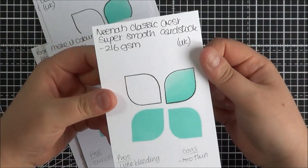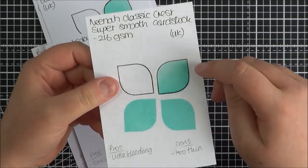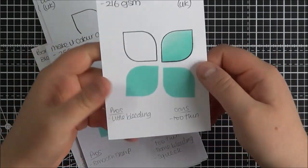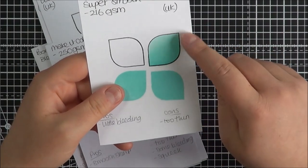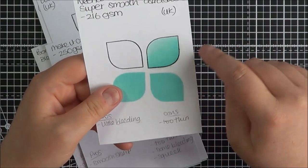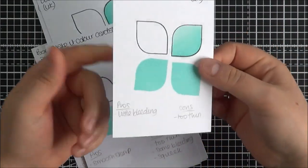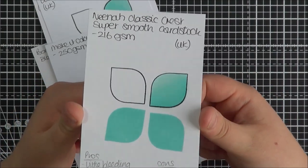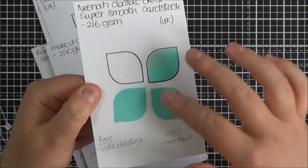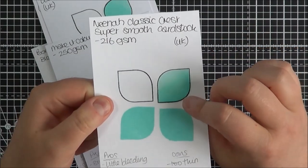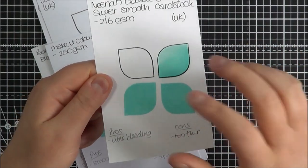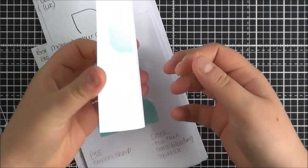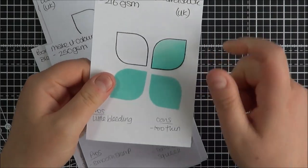I then got the Neenah Classic Crest super smooth cardstock which you can get in the UK. This is 216 GSM. For me it really feels quite thin. It's nice and smooth. There was a tiny bit of bleeding however not much at all. Stamp wise not too bad. Shame it's so thin but I guess I know a lot of people would stamp, color and then cut out and then layer it on the card base. They would use two separate cardstocks but because I do quite a lot of either one layer cards or a panel I kind of don't want that. I want a thicker cardstock but it's actually quite nice though for Copic markers.